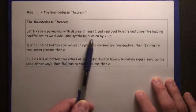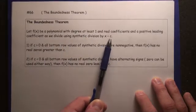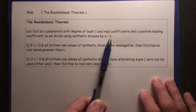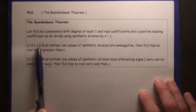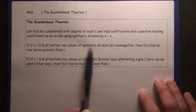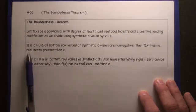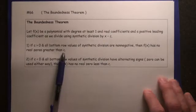Now, as we use synthetic division and we divide by x minus c, meaning we put c in the box for synthetic division, if c is greater than 0, so you put a positive number in the box, and all the bottom row of synthetic division are not negative, so at least 0, then f(x) has no real zeros greater than c.